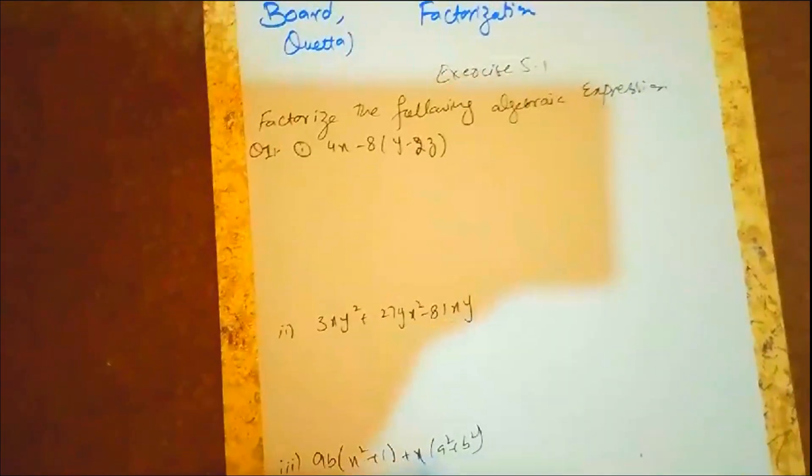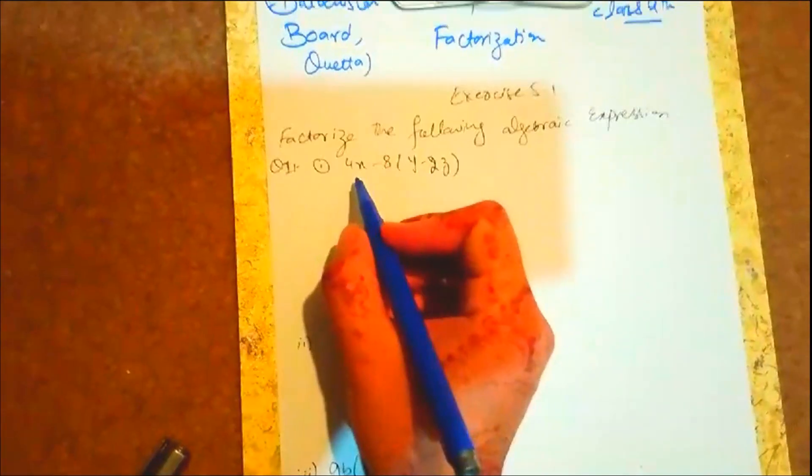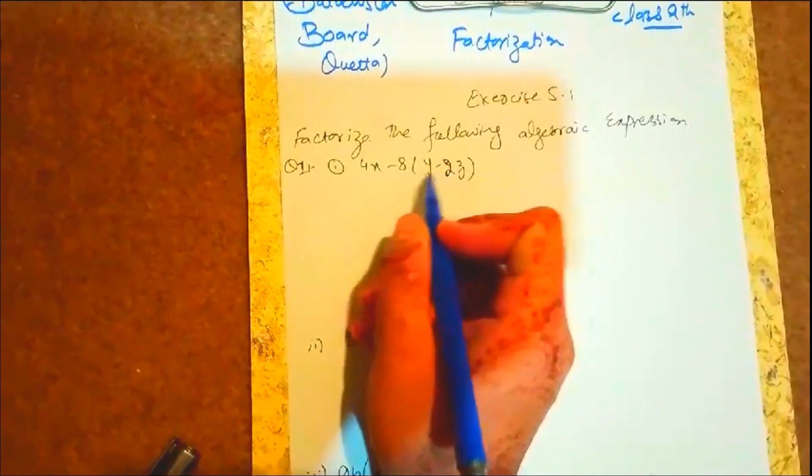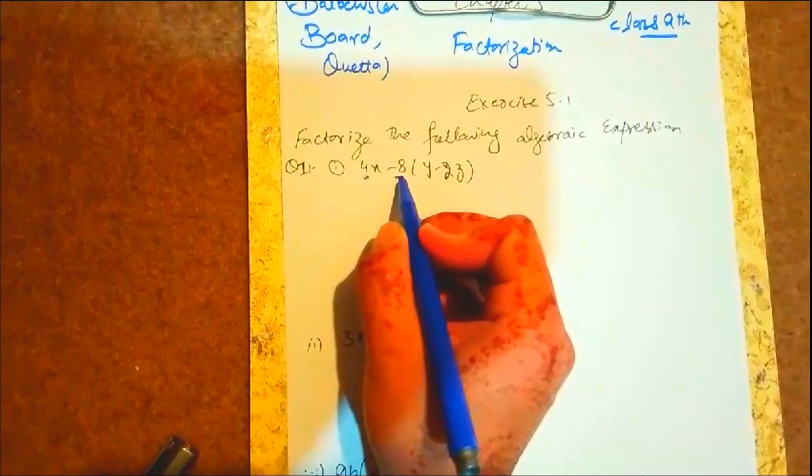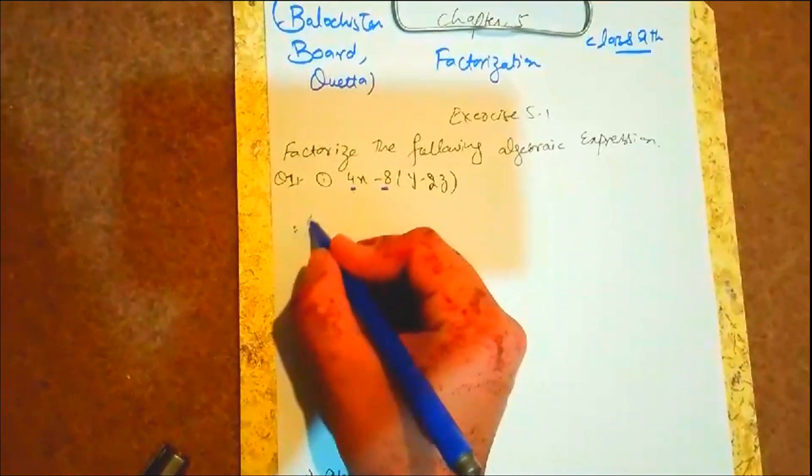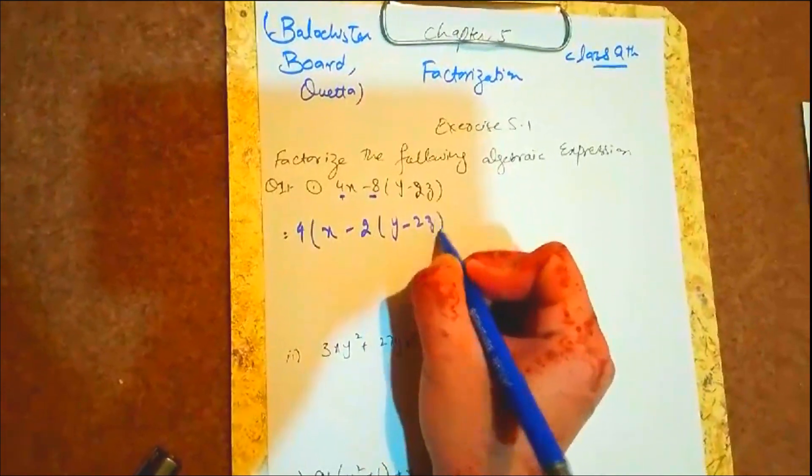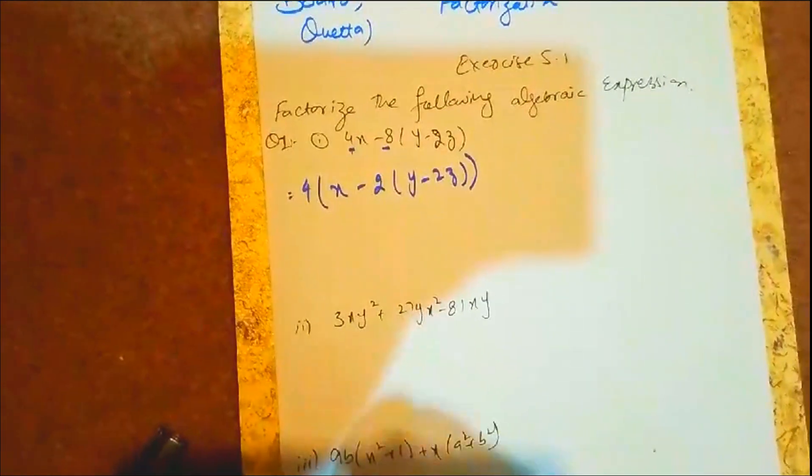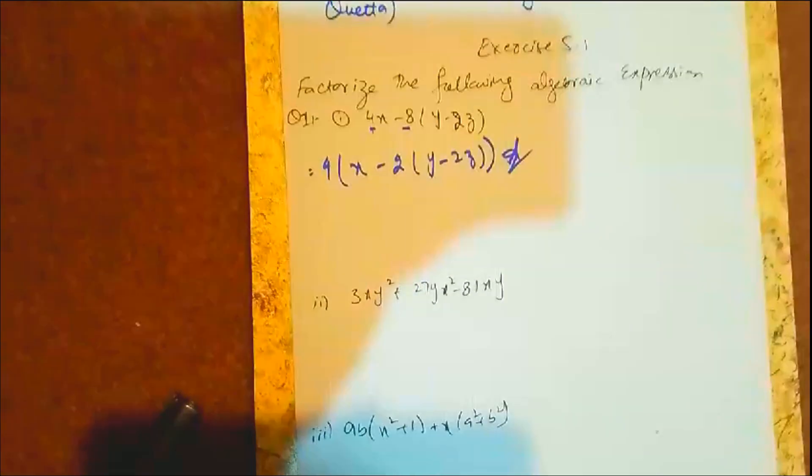You can see it very carefully. Here we see 4x - 8(y - 2z). So we have to see what is common. Here 4 and here 8, so there is 4 common. 4 can be factored out: 4(x - 2(y - 2z)). If you want to multiply this, otherwise we are doing this next.